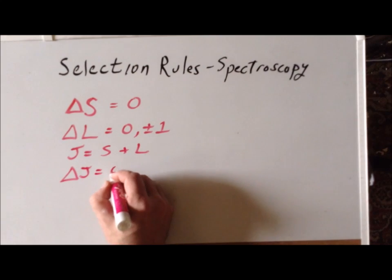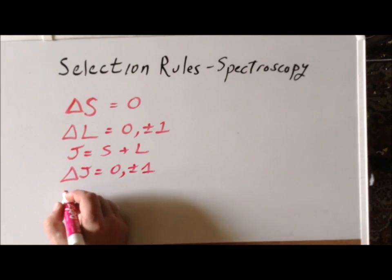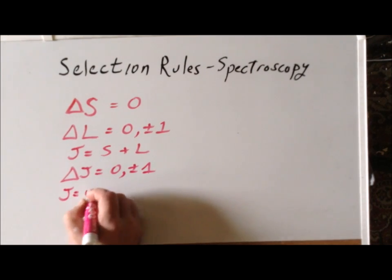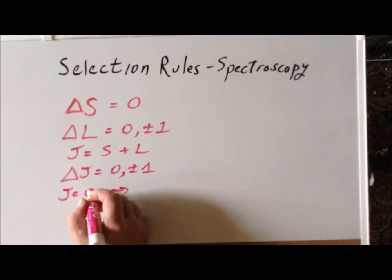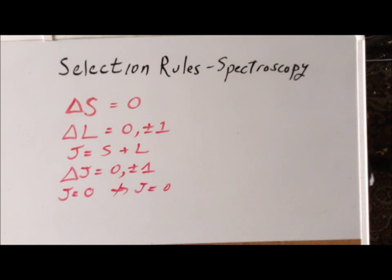It's going to be equal to zero plus or minus one. And again, we have the rule that capital J equals zero cannot go to capital J equals zero. So zero to zero is not possible for J.